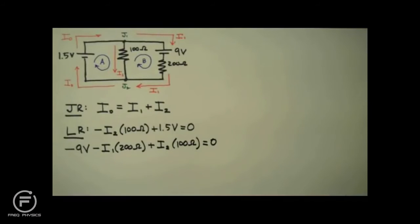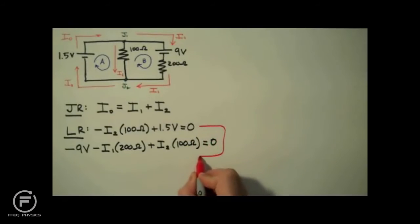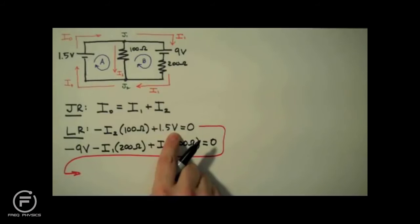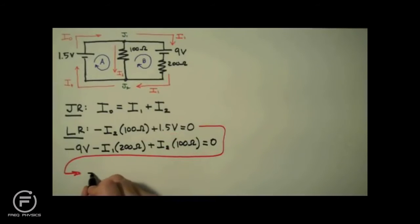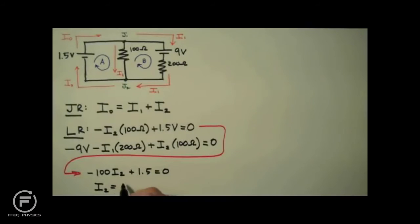At this point the physics of determining the current is done — all that's left is algebra. We have three equations and three unknowns. I'm going to start with the middle equation and solve for I2. I'll drop the units — something I rarely do, but with Kirchhoff's rules it makes the equations much easier to handle. Solving gives I2 equal to 0.015 amps, or 15 milliamps.